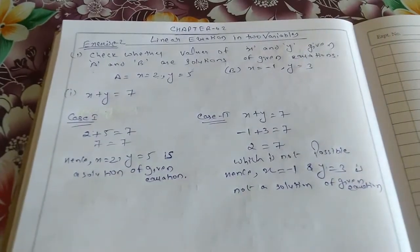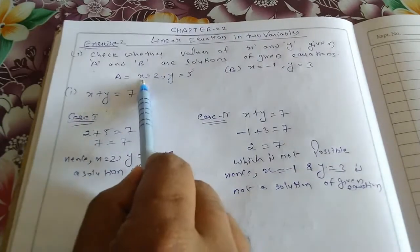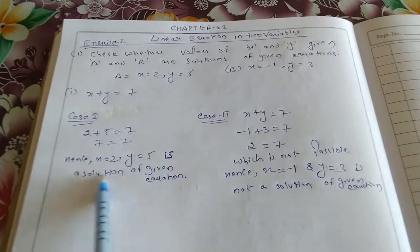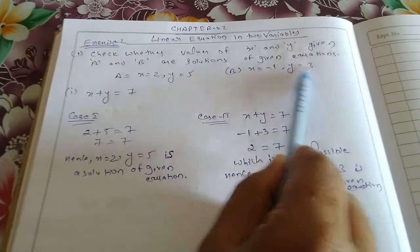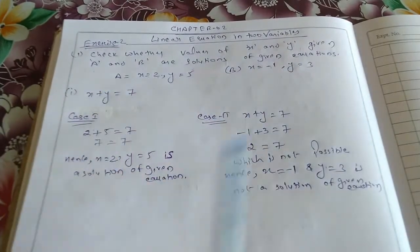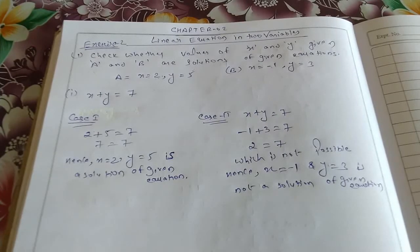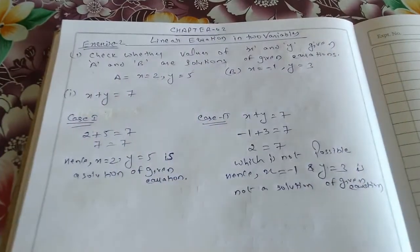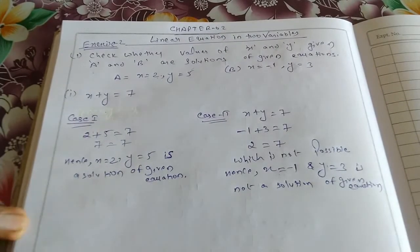So x equals to minus 1 and y equals to 3 is not a solution of this equation. x equals to minus 1 is not a solution. Clear? Okay, so here we have made it clear. Second question.